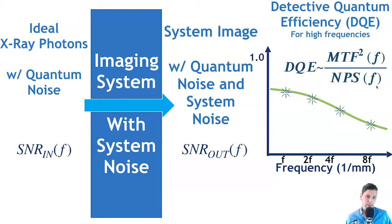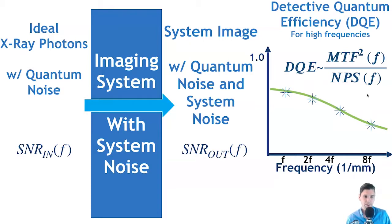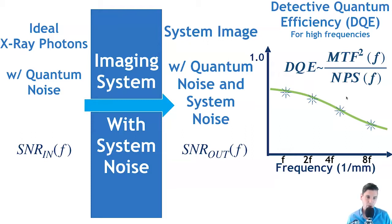We can make DQE curves as a function of spatial frequency to see how efficient the system is. A perfect detector with infinitely small pixels would have a DQE of 1 for all spatial frequencies, but such systems don't exist. In practice, we compare DQE curves between systems to assess how efficiently each captures the inherent information in our image. The DQE can also be expressed as the MTF squared divided by the noise power spectrum, which is why we discussed those two quantities — less blurring means a higher DQE.